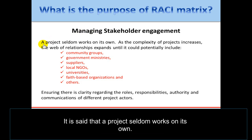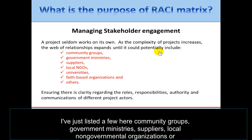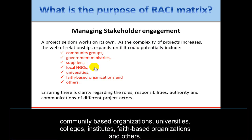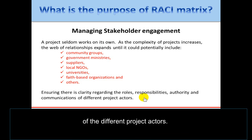A project seldom works on its own. As the complexity of projects increases, the web of relationships expands to potentially include a number of groups — community groups, government ministries, suppliers, local non-governmental organizations or community-based organizations, universities and colleges, institutes, faith-based organizations, and others. The RACI's main purpose is to ensure there is clarity regarding the roles, responsibilities, authority, and communications of the different project actors.